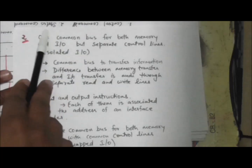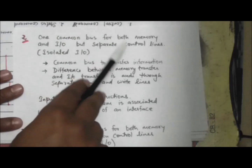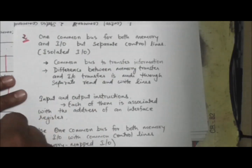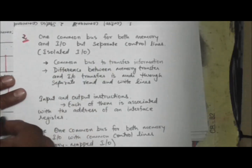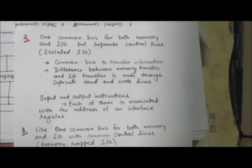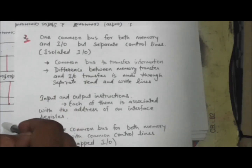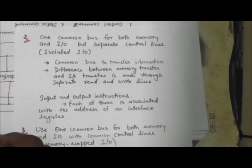The second method is using one common bus for both memory and input-output, but with separate control lines. This method is called the isolated input-output method. In this method, the computer uses one common bus to transfer information between memory or input-output and the CPU. The distinction between a memory transfer and an input-output transfer is made through separate read and write control lines. During input-output transfer, the input-output read and input-output write control lines are enabled.